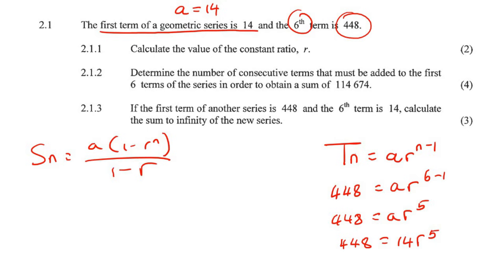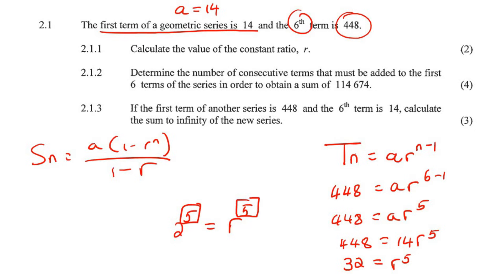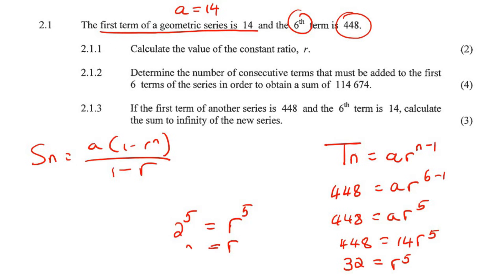Now you could use logs here, or you could use shift-fact on your calculator. Shift-fact of 32 gives you 2 to the 5. These two top parts are already the same, so the only way both sides can be equal is if the bottom parts are the same. Therefore r must be 2.